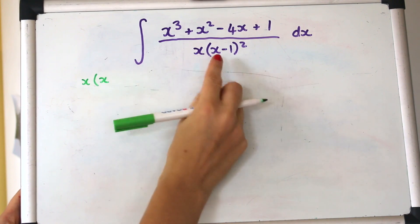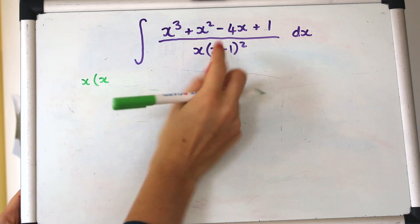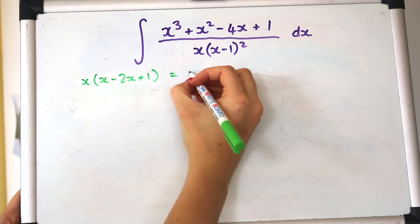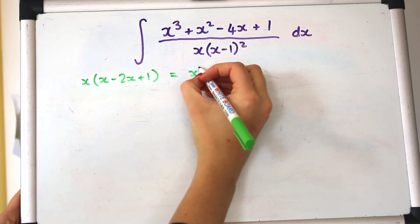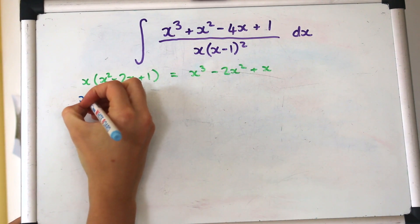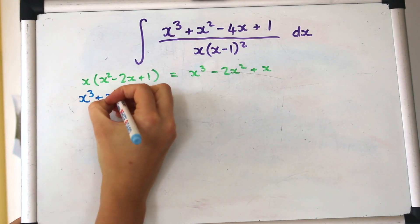If we expand out double brackets x minus 1 times x minus 1 first of all and we'll get that and then we can expand by the x and then what we want to do is write the numerator in terms of that.